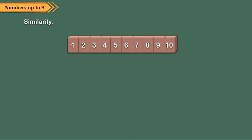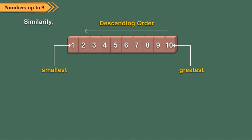Similarly, if we write the numbers from the greatest to the smallest, we say that the numbers are in decreasing or descending order. Here, numbers are written in decreasing order.